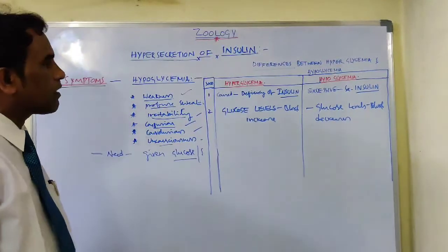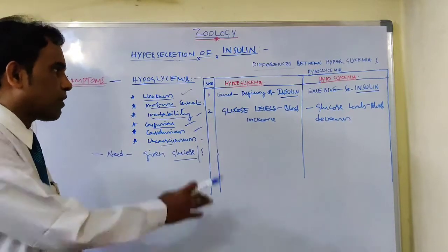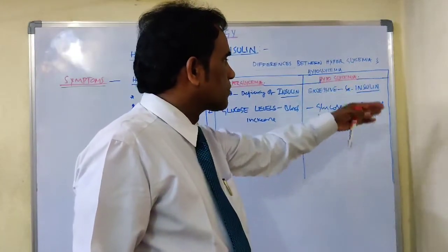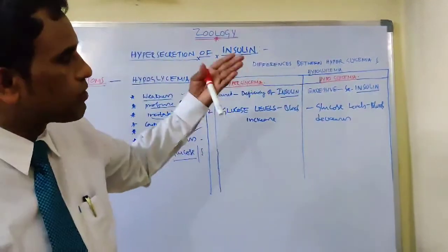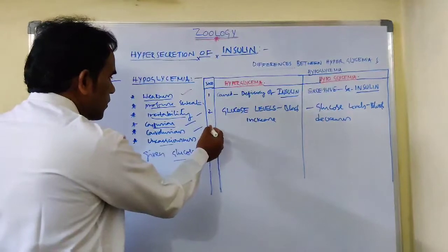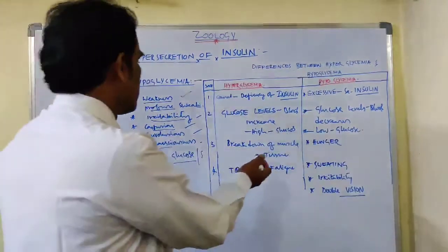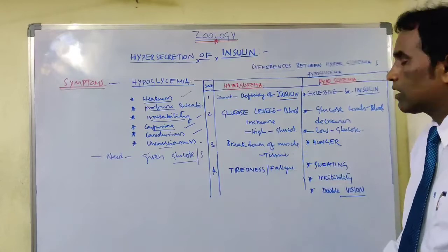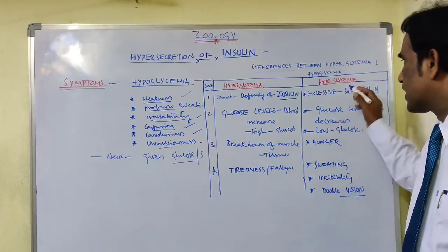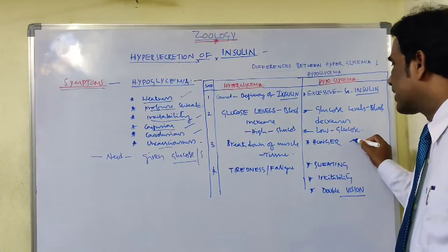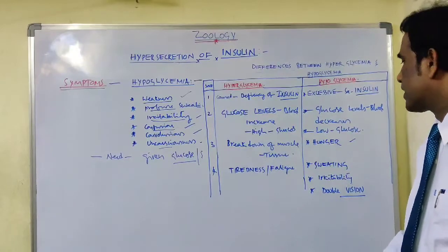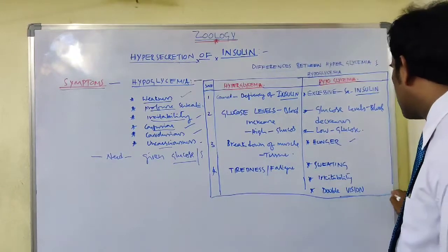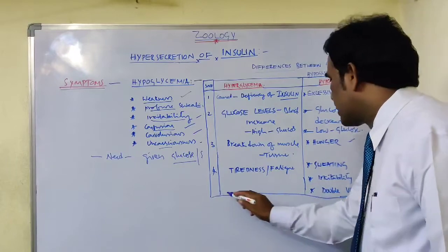Due to deficiency of insulin, glucose is unable to be absorbed, so levels of glucose increase in the blood. But in the case of hypoglycemia, due to excessive secretion of insulin, there is very little glucose remaining in the blood. In hyperglycemia, breaking down of muscle tissue and tiredness or fatigue is seen, but in hypoglycemia, sweating, irritability, and double vision are seen.